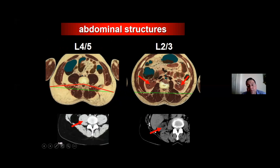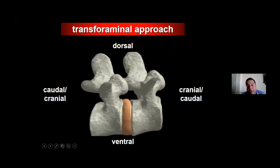If you use the posterolateral approach, we should use the drill to make the SAP thinner so we can approach the lumbar spine from a different angle. But let's focus on the pure transforaminal soft tissue approach — there is no drilling in this approach.